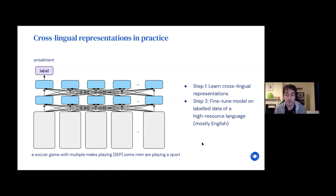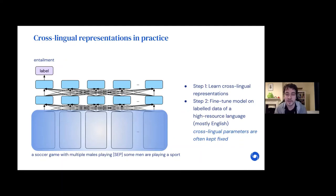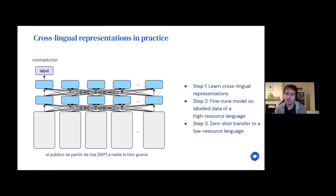What is quite promising with these multilingual representations is that the fine-tuning data can come from any one of the languages on which the model has been trained. In practice, because data is typically most prevalent in a high-resource language such as English, these models are typically fine-tuned on English. One design choice is that if you're concerned the model might forget multilingual information acquired during pre-training, people have also resorted to freezing the joint multilingual parameters. Given that we have these multilingual parameters as well as some task-specific knowledge, we can then zero-shot transfer our model to a new language of the same task — as you can see here with natural language inference data in Spanish.